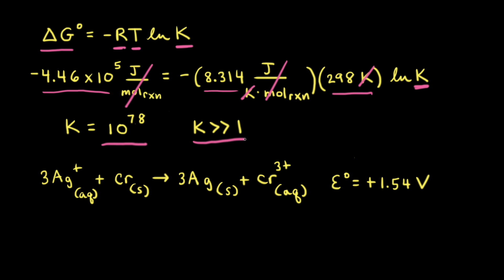Since K is such an extremely large number, the reaction essentially goes to completion and all the reactants turn into products. For a reaction like this, it's not necessary to use equilibrium arrows — we can just draw a single arrow going to the right.